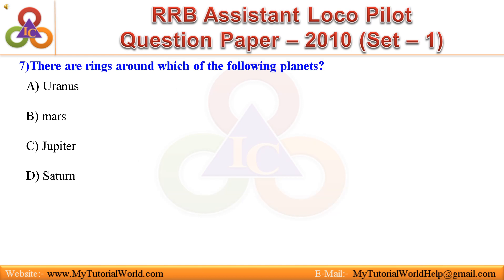Question 7: There are rings around which of the following planets? A. Uranus, B. Mars, C. Jupiter, D. Saturn. Answer is Saturn.